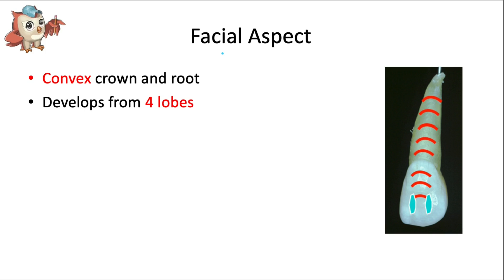A big difference between this tooth and the central is that the maxillary lateral incisor has a very convex crown and root due to a very developed middle facial lobe. Spoiler alert — this facial convexity, as shown by these red lines here, makes the tooth's mid-root cross-section oval instead of triangular like the maxillary central, but I'll show that later in the video. This crown does have the same two developmental depressions that the central had, because it also develops from three facial lobes and one lingual lobe.